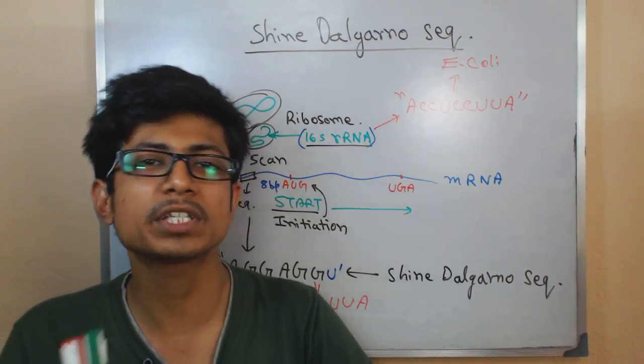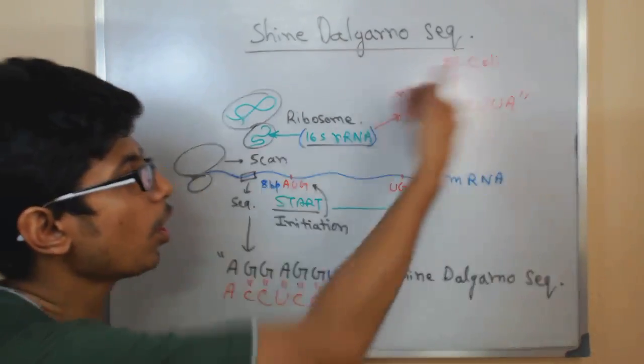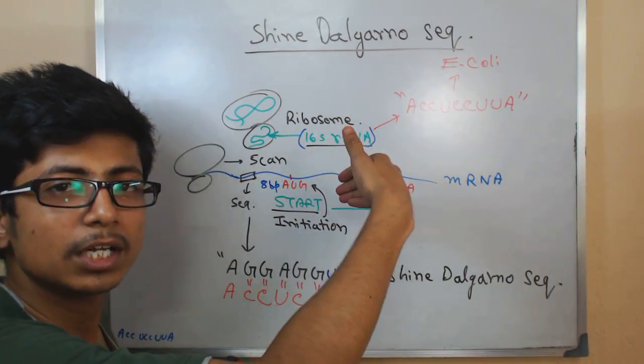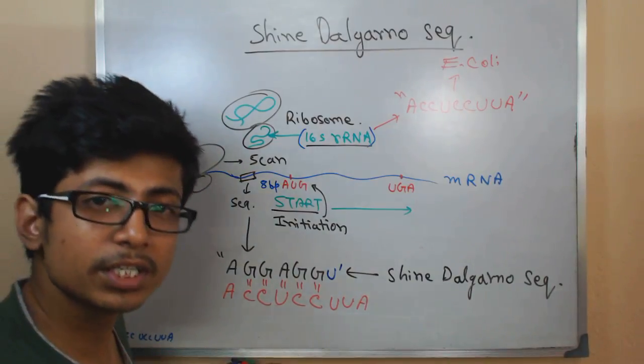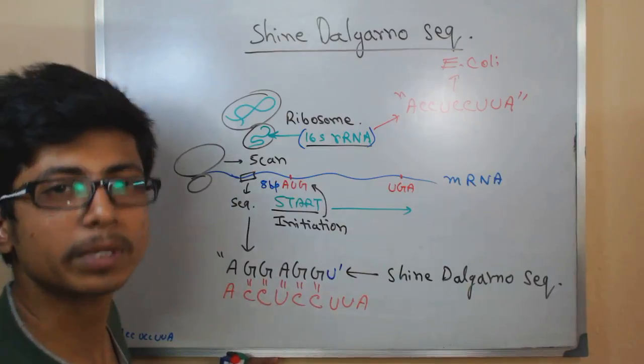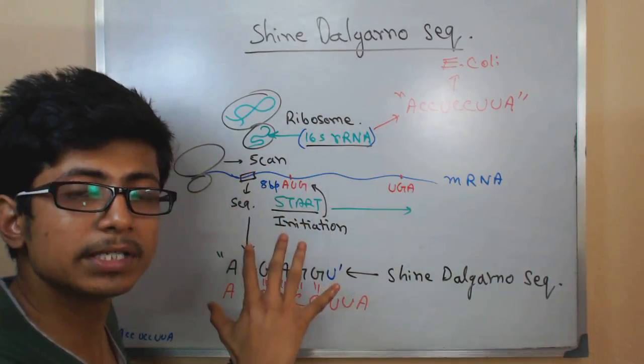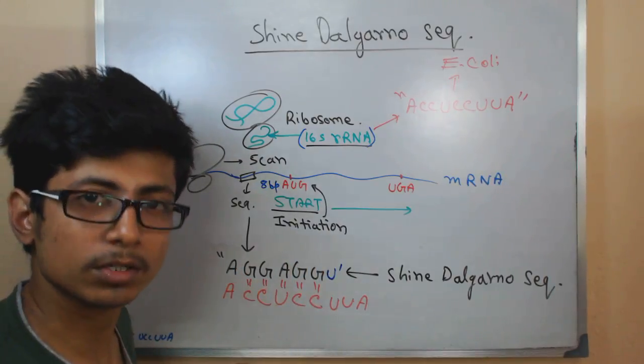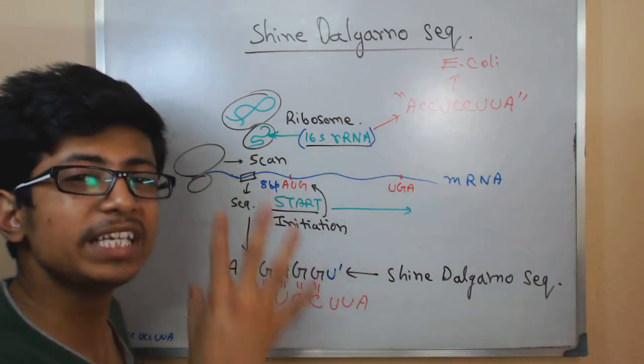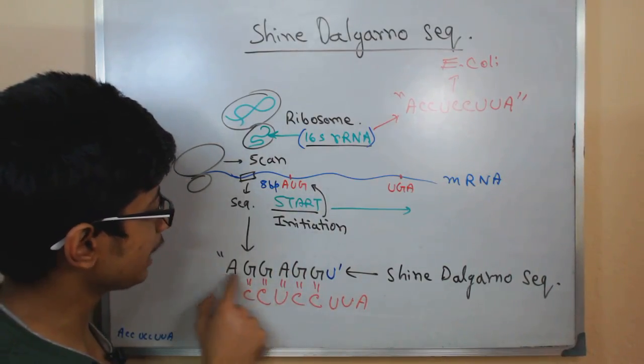So it will bring all the machinery, it will turn on all the machinery and then bring all those tRNAs, so that they can start the translation process as soon as they recognize the start AUG sequence. That's how Shine-Dalgarno sequence works in prokaryotes. This is an example for E. coli translation or protein synthesis.